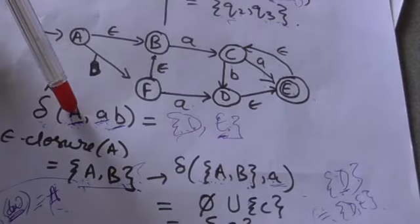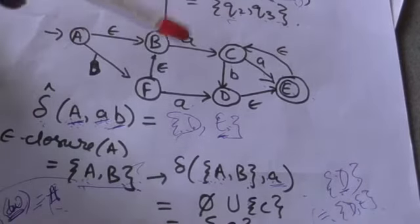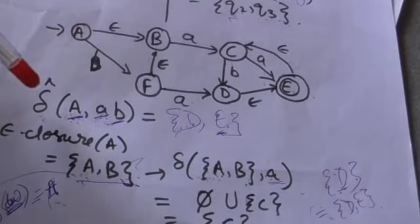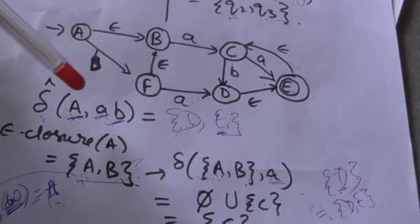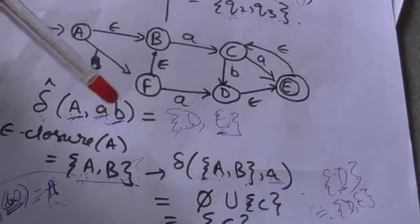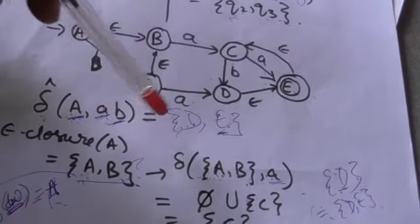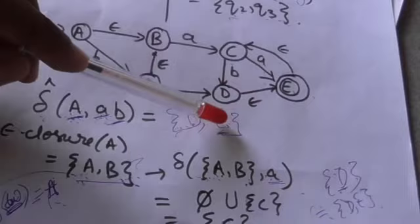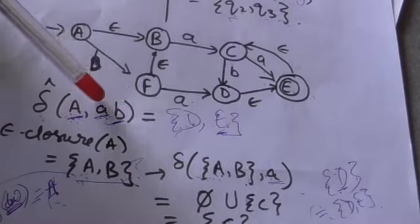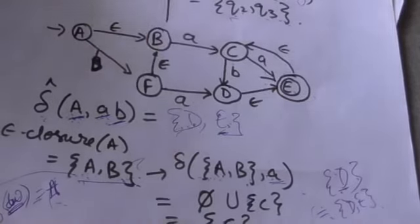Here, a is the initial state of this NFA, and the output of the extended transition function for state a and string 'ab' is a set containing final state e. So the string 'ab' will be accepted by this NFA.